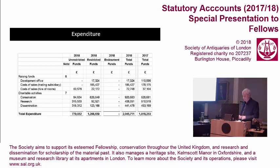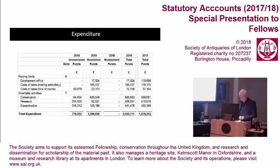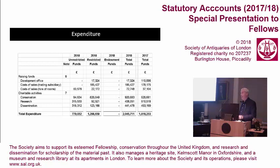The society is still in discussion with our landlords — the government — and their agents, over rent for Burlington House and the renewal of the lease for a further 10 years. The total spend is £2,045,711 in 2018. Against income of £2,265,818 — as shown on a previous slide — that gives a surplus of £218,000.